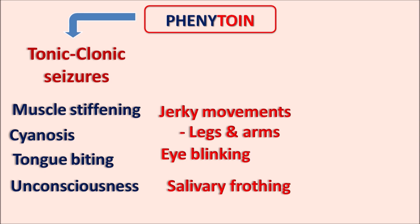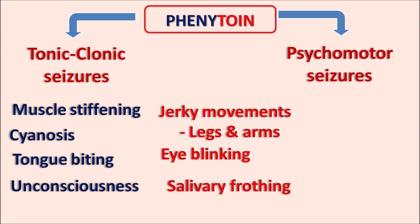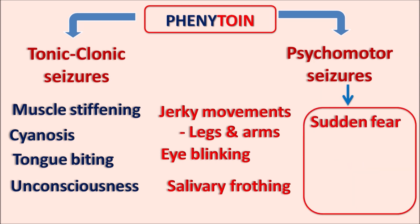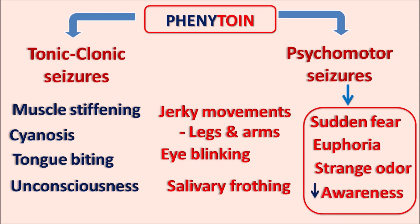Phenytoin is one of the drugs that can be used in the treatment of tonic-clonic seizures. Similarly, this drug is also useful in the treatment of psychomotor seizures — another type of seizure mainly including loss of memory, sudden fear or euphoria, strange odor or taste, decreased awareness and short-term loss of memory. However, it is not useful in absence seizures, which are mainly observed in children.